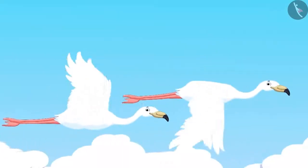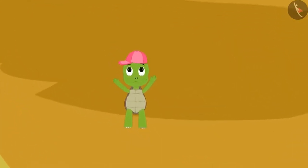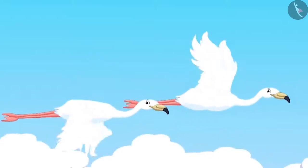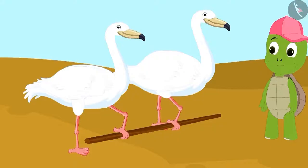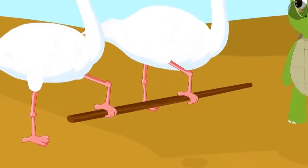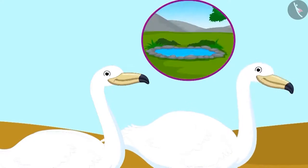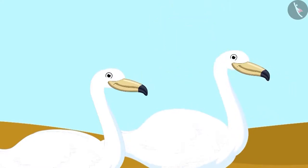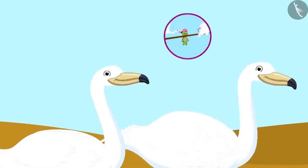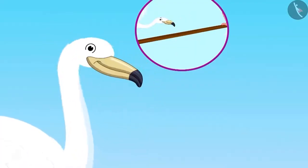Two birds saw Tufan Turtle thirsty near the pond below. The birds were determined to help him. They caught a wooden stick between them and told Tufan that they would drop him to the other pond. The only condition they had was that Tufan would not say anything all through the way or else he would fall down.